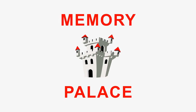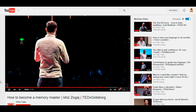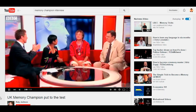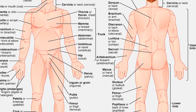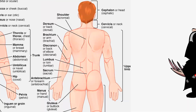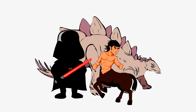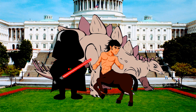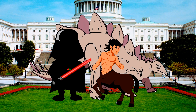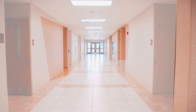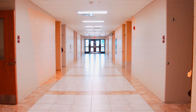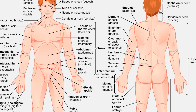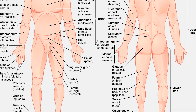A memory palace is probably the most effective memorizing technique in history. I personally regard it as one of the greatest inventions of humans. Basically, if you have something you can't commit to memory, you convert it into something you can imagine, and then you put this association in a location you know — a palace. Later on, you simply virtually walk through the palace and the association will be there, allowing you to retrieve the data you have memorized.